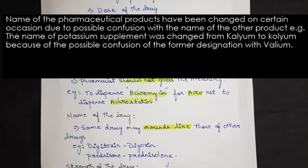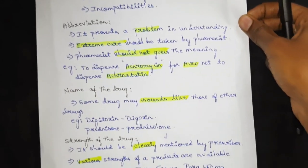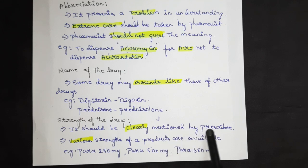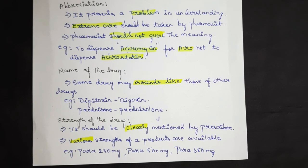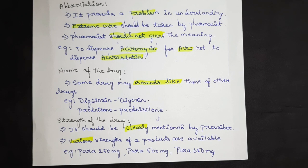For example, a potassium supplement known as Kalium or Cholium — the name should be clearly mentioned to avoid confusion. Regarding the third error, strength of the drug: it should be clearly mentioned by the prescriber. For example, Paracetamol is available in 250mg, 500mg, and 650mg. Paracetamol is an over-the-counter medicine, but the pharmacist will take care that the patient gets the correct strength, especially since prescription drugs are available in more than one dosage strength.